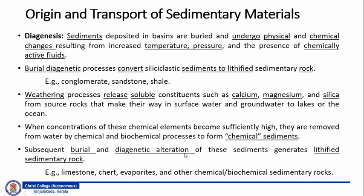Then there is a process called diagenesis. Sediments deposited in basins are buried and undergo physical and chemical changes resulting from increased temperature, pressure and the presence of chemically active fluids. We call this burial diagenetic process, which converts siliciclastic sediments to lithified sedimentary rock. Siliciclastic refers to granular rock fragments including silica that get deposited and form as a lithified sedimentary rock.